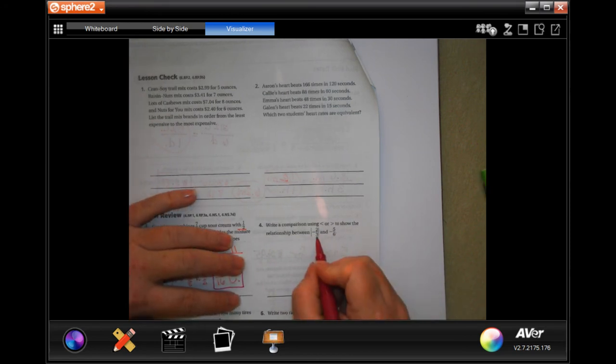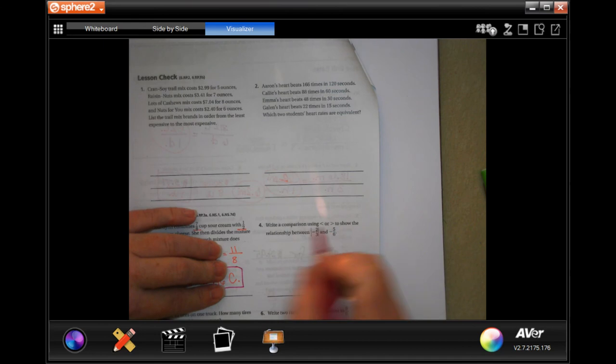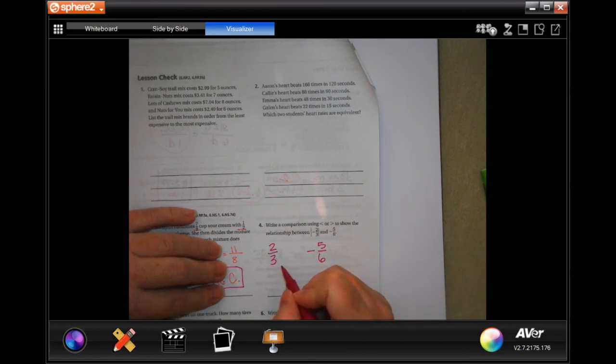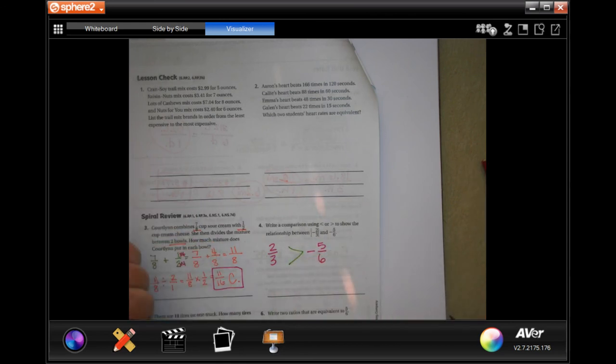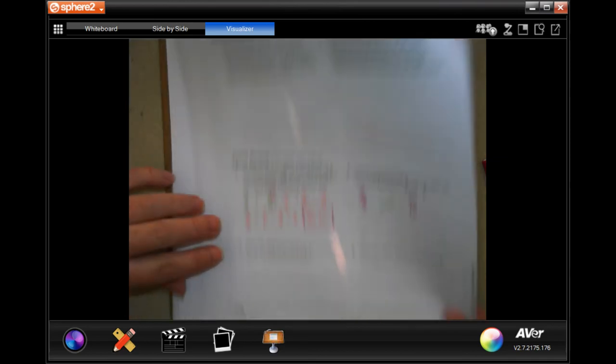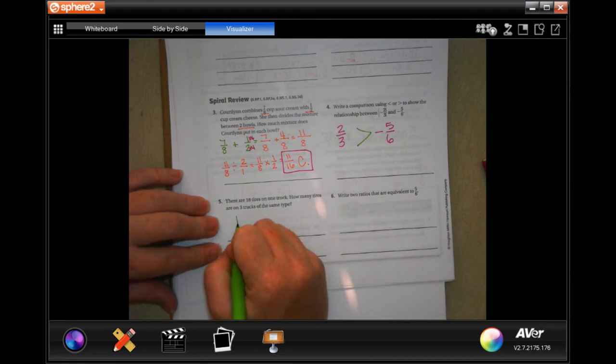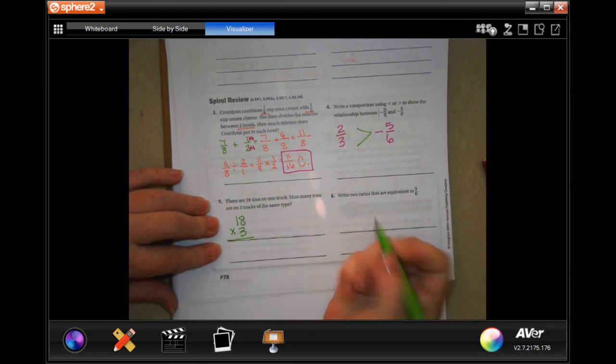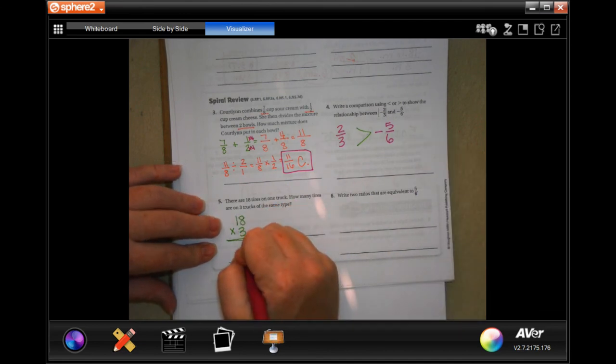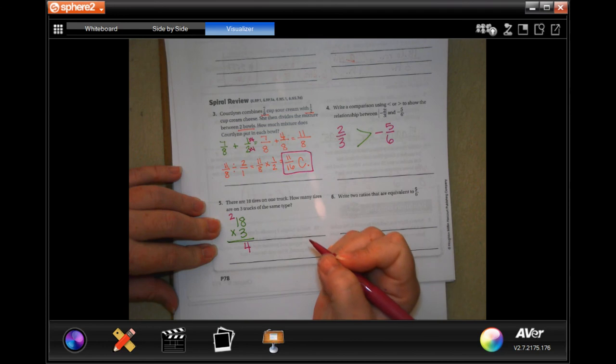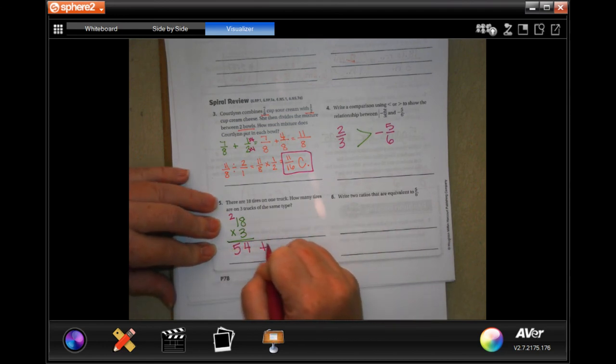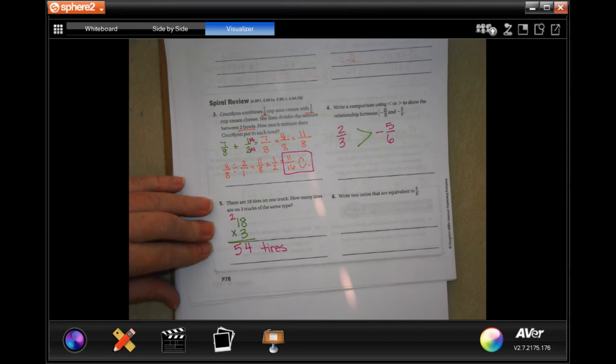All right guys, this one should be really easy for you because the absolute value of 2/3 is 2/3. The other one is a negative. A positive number is always going to be bigger than a negative number. Always. Every single time. There are 18 tires on one truck. How many tires are on three trucks of the same type? So 18 times 3. 3 times 8 is 24, carry 2. 3 times 1 is 3, plus 2 more. 54 tires. There we go.